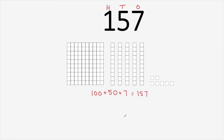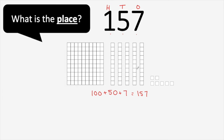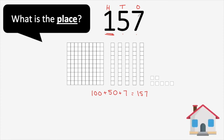Now we can ask some questions about the digits in the number 157. The first question we can ask is: what is the place? When we're thinking about place, we're thinking about where something is. So we could say, what is the place of the one? That means where is the one? Since I labeled each digit, it's really easy to see — the one is in the hundreds place. The place of the five is the tens place. That's where it is. And the place of the seven is the ones place.